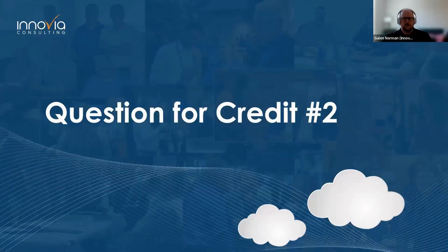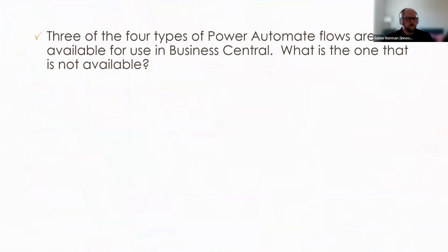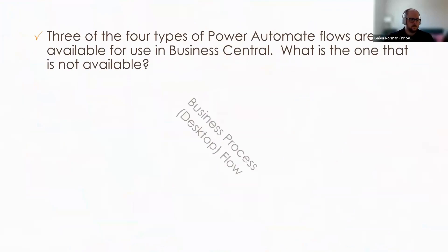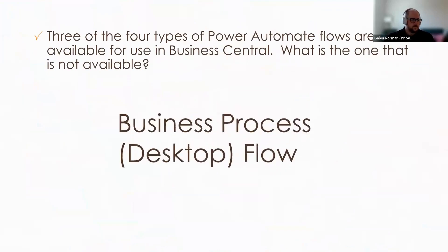Let's take another break for your second question for credit. Three of the four main types of Power Automate flows are available to use in Business Central. What is the one that is not available? The answer is the business process or desktop flow.